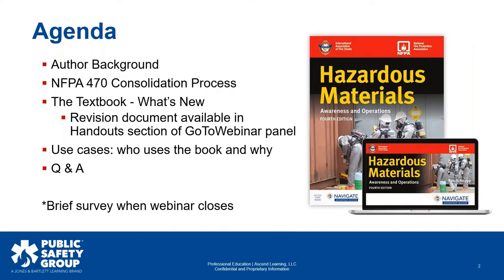Just to give you an idea of what the agenda is going to look like: Rob's going to start talking about his background as well as the NFPA 470 consolidation process. Then he's going to talk through the textbook, including what's new. We will show what we call the revision document, which includes a list of all chapter-by-chapter changes within this edition. We'll open it on the webinar and it's also in the handouts tab on your go-to control panel, and we'll send it out in the follow-up email.